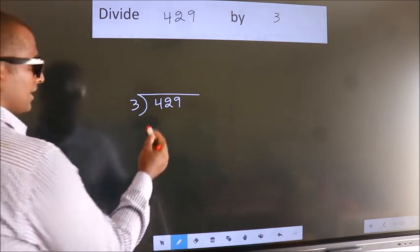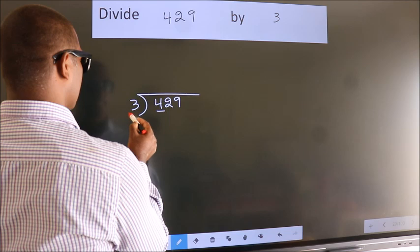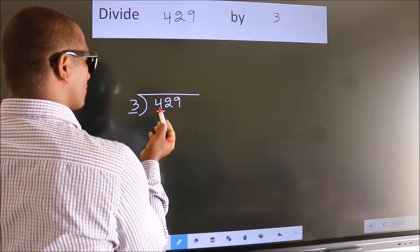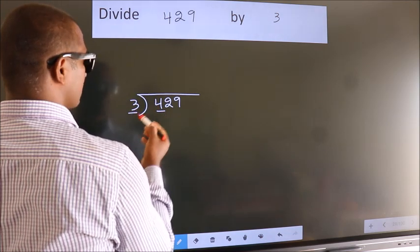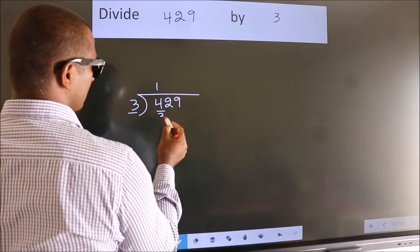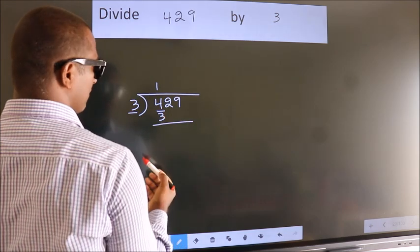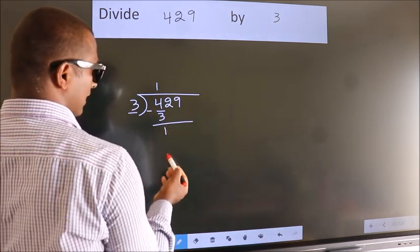Next, here we have 4, here 3. A number close to 4 in 3 table is 3 1s 3. Now, we should subtract. We get 1.